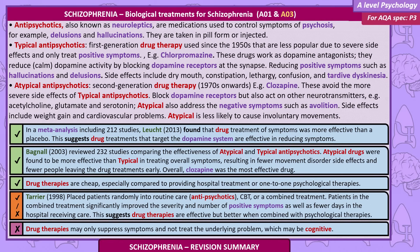Typical antipsychotics reduce positive symptoms such as hallucinations and delusions. Side effects include dry mouth, constipation, lethargy, confusion, and tardive dyskinesia.